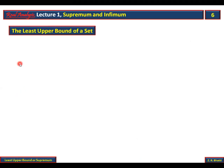Ab 'least upper bound' of a set — yaani supremum — ki taraf aa rahe hain. Iske naam se hi pata chal raha hai: agar kisi set ki upper bounds exist karti hon, to un upper bounds mein jo sabse choti bound hogi, woh 'least upper bound' hogi.